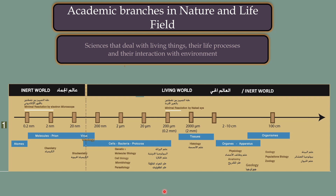Academic branches in the nature and life field are a group of sciences that deal with living things, their life processes, and their interactions with the environment. As we can see in this diagram, the natural world is organized across a spectrum of spatial scales. Starting from the point of minimal resolution by the naked eye, moving in one direction leads to the microscopic world. At the smallest scale, we find atoms and molecules, and the branch of science that deals with this scale is chemistry.